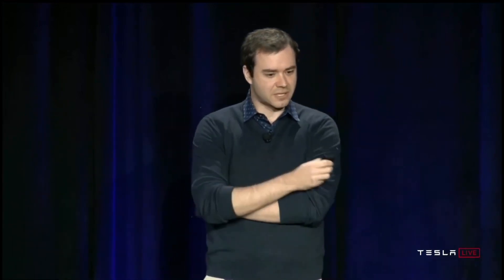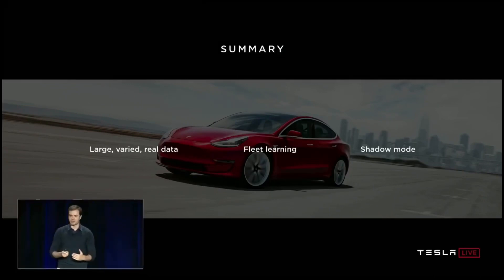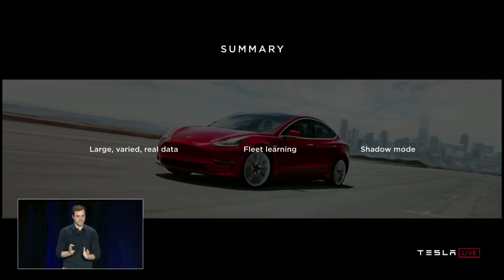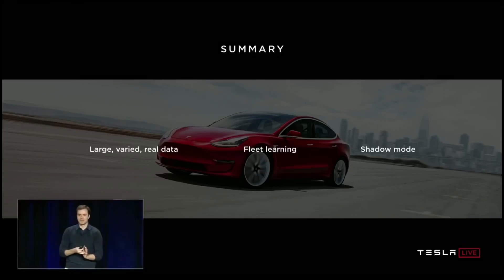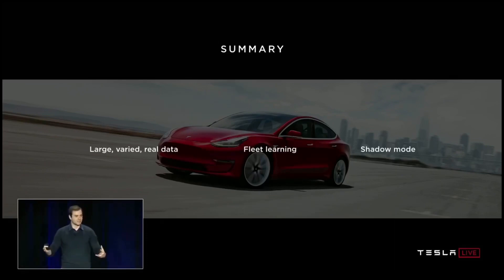What I've talked about so far is really the three key components of how we iterate on the predictions of the network and make it work over time. You require a large, varied, and real dataset — and we can really achieve that at Tesla. We do that through the scale of the fleet, the data engine, shipping things in shadow mode, iterating that cycle, and using fleet learning where no human annotators are harmed in the process, using data automatically at scale.